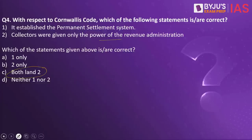The first statement reads: it established the permanent settlement system. Yes, the Cornwallis Code was introduced in 1793 to introduce stability in administration. It brought about permanent settlement or the zamindari system, which established a revenue collection scheme and reorganized the judiciary. It also felt there had to be a clear-cut separation of powers, so collectors were given only the power of revenue administration and some magisterial powers were stripped off. Cornwallis wanted separation of powers and divested the collector of all judicial and magisterial powers. So both statements are right, and the answer is both one and two.